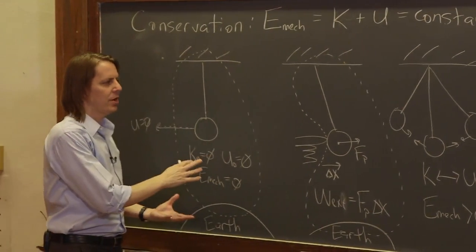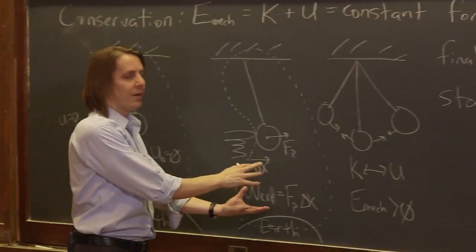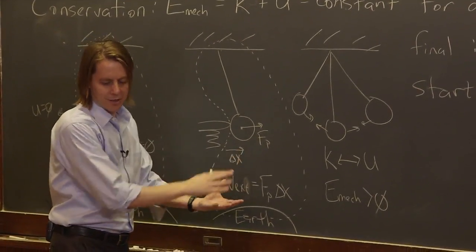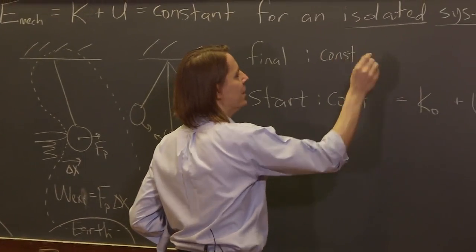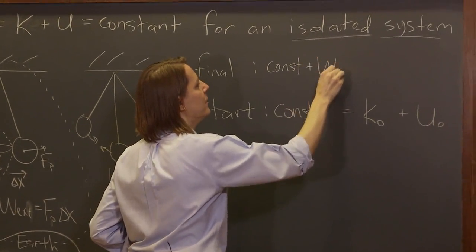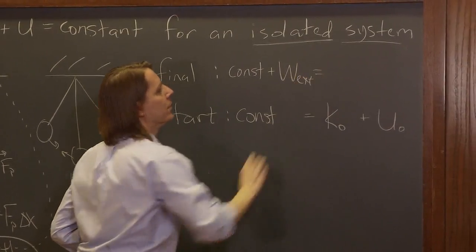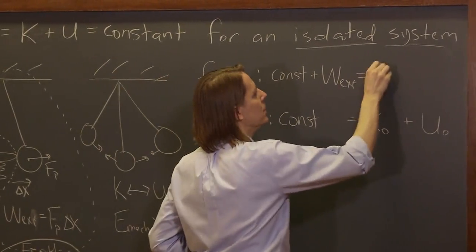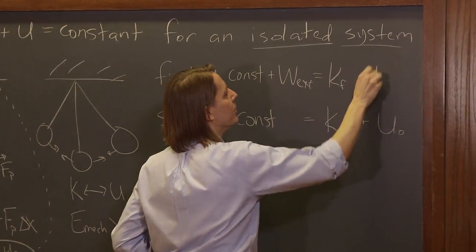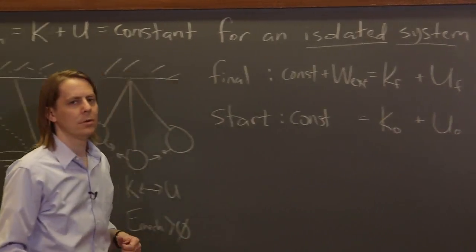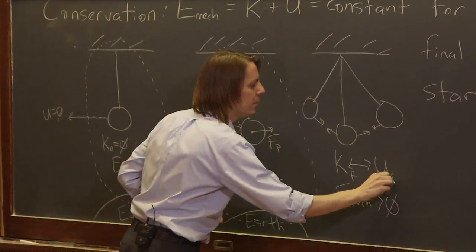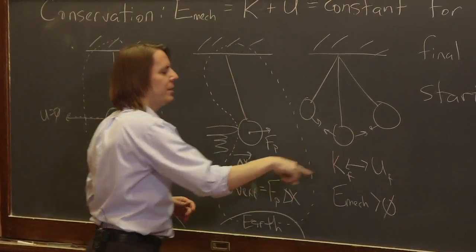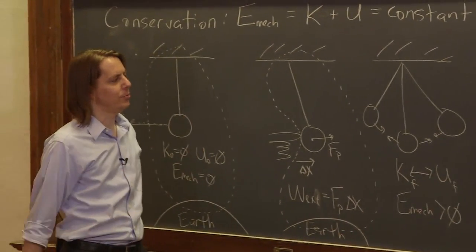And after we were done, we had whatever we started with, the constant, plus whatever showed up because we pushed it. So we had the constant, which in our case was zero, but it doesn't have to be zero, plus the external work. And that's equal to K-final plus U-final. We've got some higher energies. So we could put finals on here. There's kinetic final and potential final, and it just shuffles back and forth.